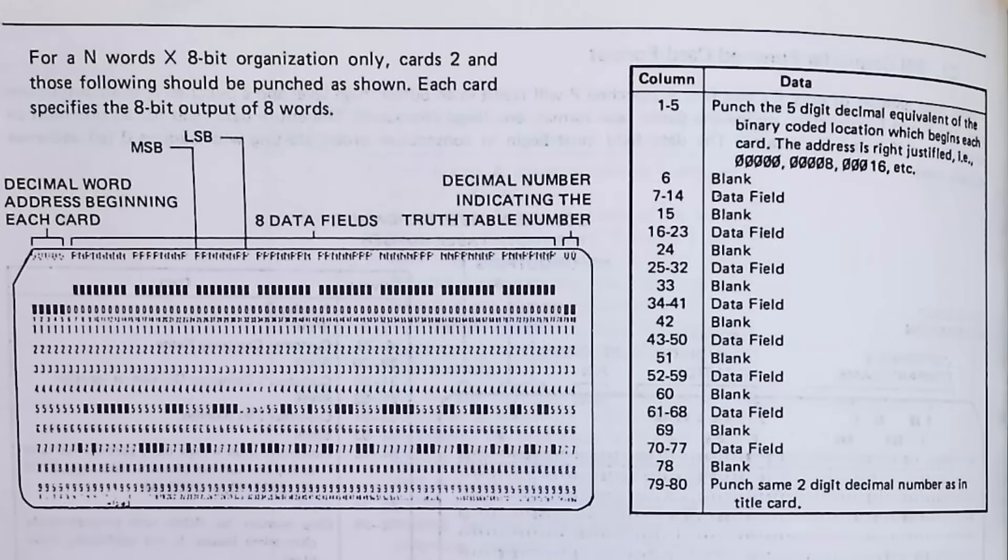Then the data bytes are given, but without the B and F bracketing characters. And then finally, each card had to have the truth table number, which was basically the device ID number or the batch job number.